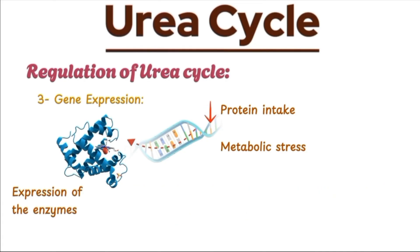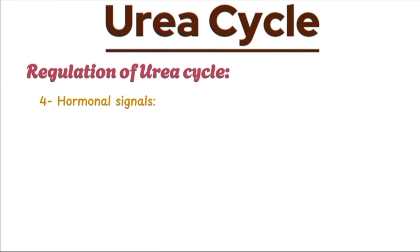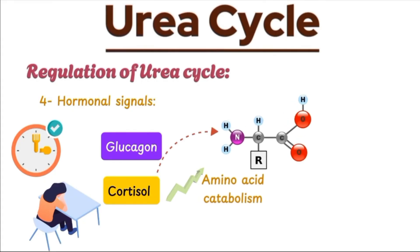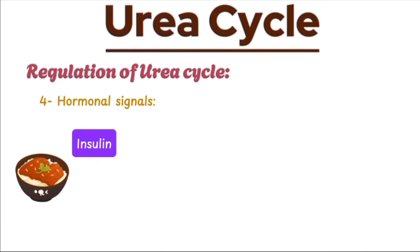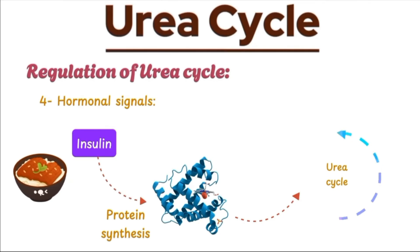Conversely, during times of low-protein intake or reduced metabolic demand, the expression of these enzymes is downregulated, conserving energy. The urea cycle is also influenced by hormonal signals, which reflect the body's broader metabolic state. Hormones like glucagon and cortisol come into play during fasting or stress, promoting amino acid catabolism and thereby increasing ammonia production, which in turn activates the urea cycle. On the other hand, insulin, which is released after eating, promotes protein synthesis and reduces the need for the urea cycle by lowering amino acid breakdown.